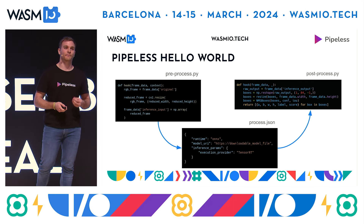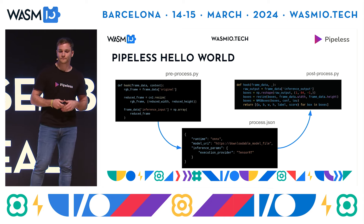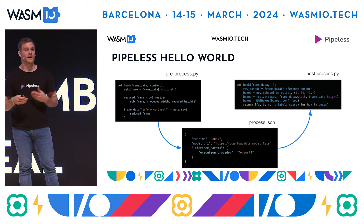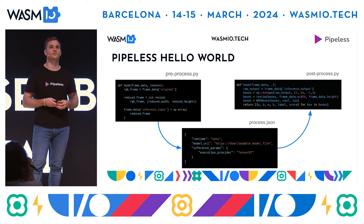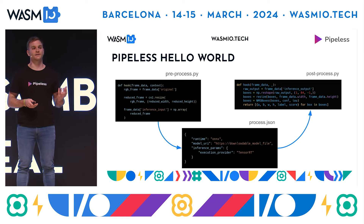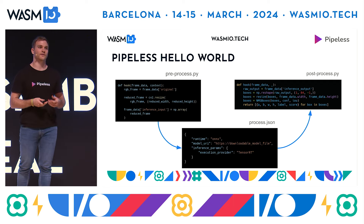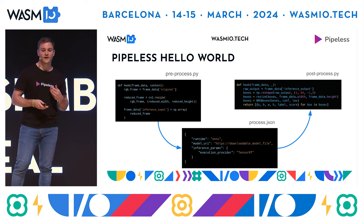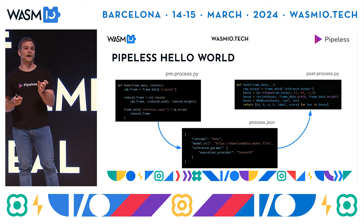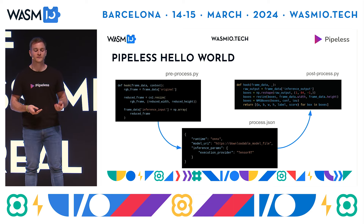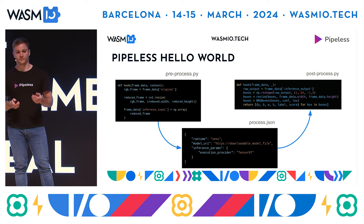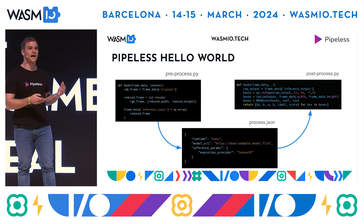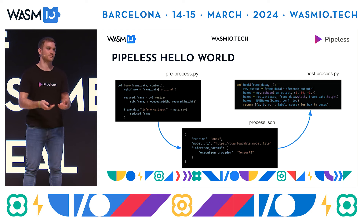This is an example of a very basic filter that will perform object detection — it will perform the object detection and export the bounding boxes in a structured format. We have a pre-processing function written in Python. It obtains the frame data and performs resizing and normalization on the pixels. That is passed to the processing step, defined in JSON, which specifies to use the ONNX runtime. We have a model URI — basically a file hosted in an S3 bucket that Pipeless can download and instantiate locally — and an execution provider like TensorRT or CUDA. Then we have the post-processing function, which takes the output from the processing step and returns the structured data — in this case, bounding boxes.